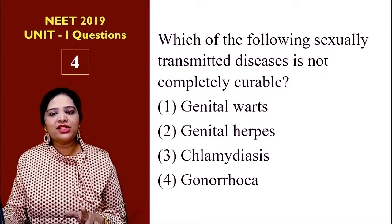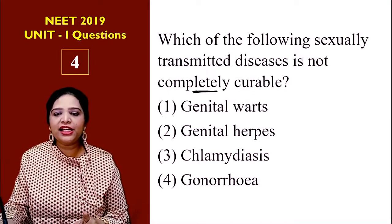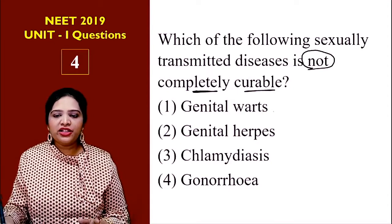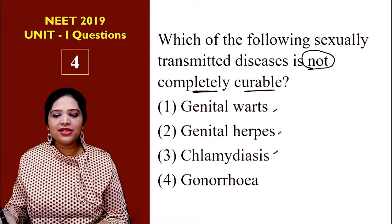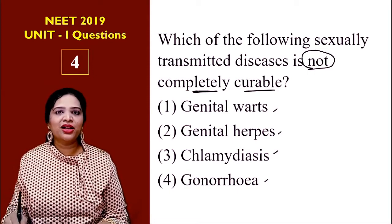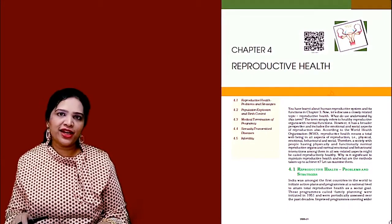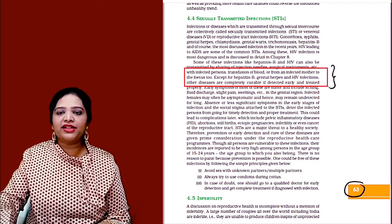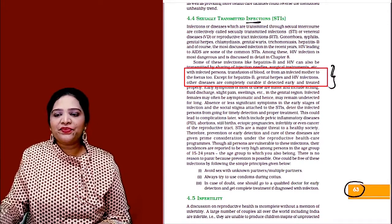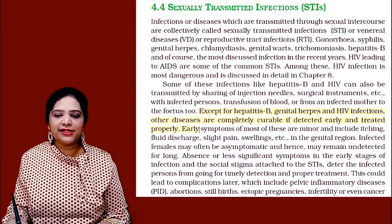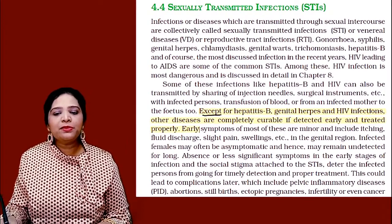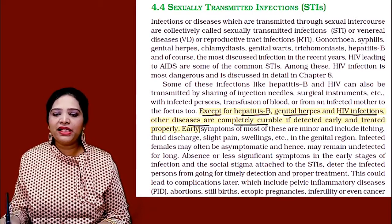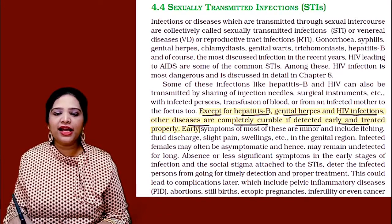Question number 4: which of the following sexually transmitted diseases is not completely curable? The options are: genital warts, genital herpes, chlamydiasis, or gonorrhea. This question is from the chapter Reproductive Health, page number 63, under the heading sexually transmitted infections. Let us zoom in and see. It states: except for hepatitis B, genital herpes, and HIV infections, other diseases are completely curable if detected early and treated properly.